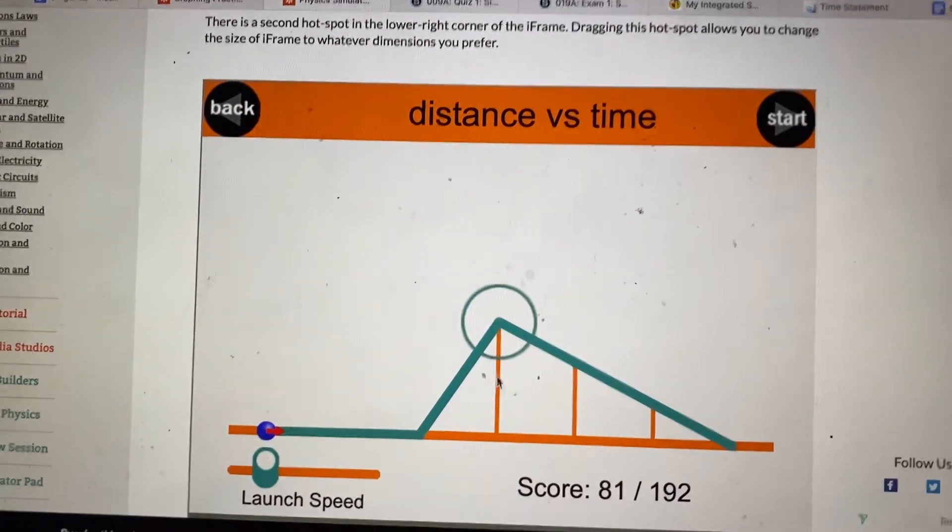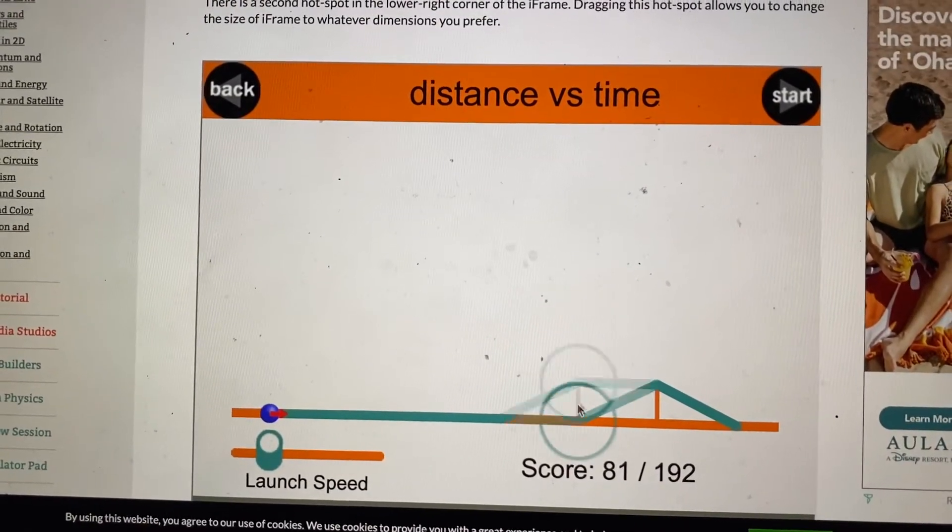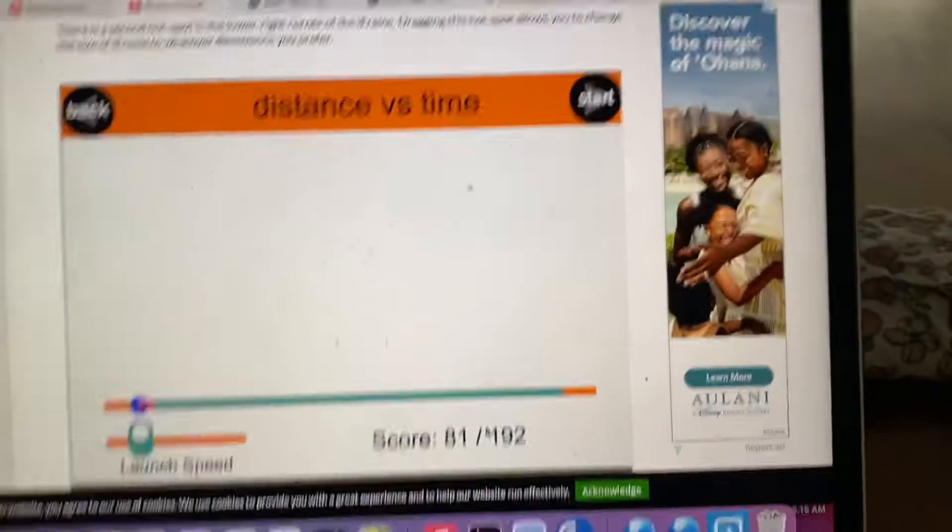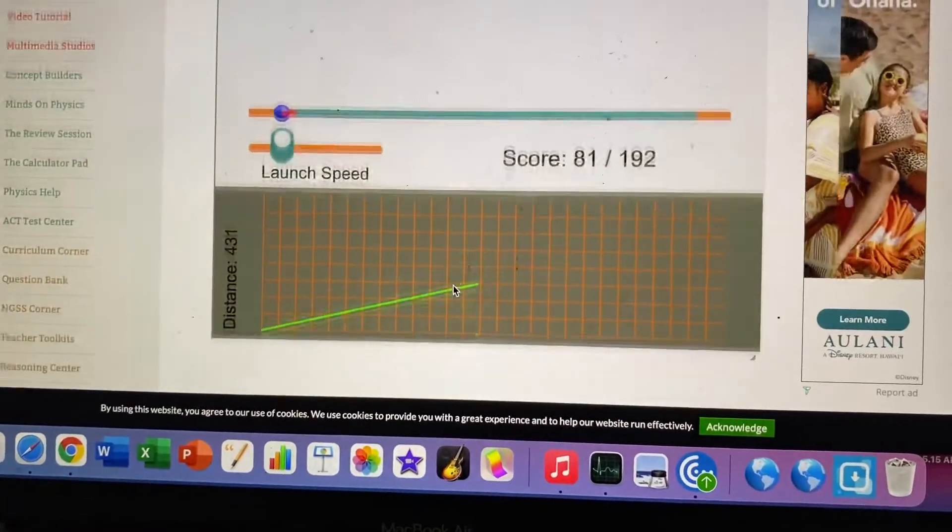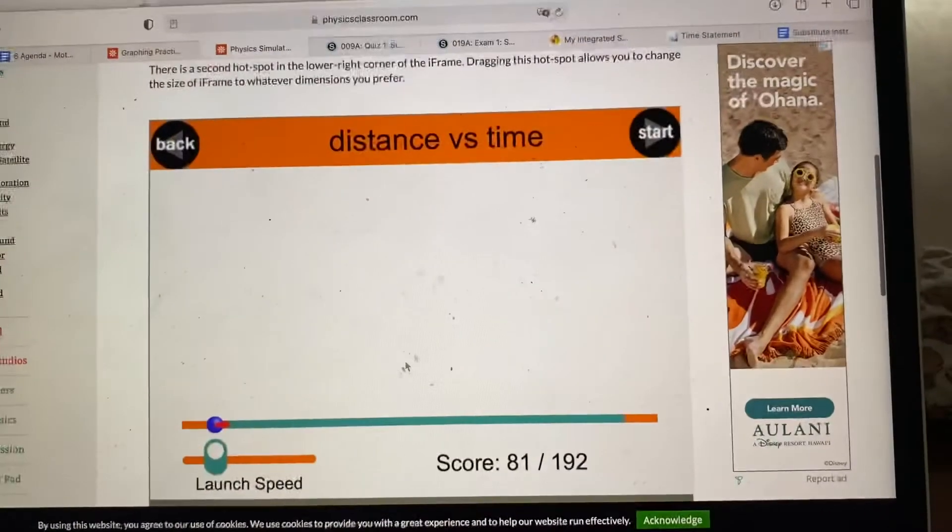Just clicking and dragging down. That's how you move the ramp. All right, click, drag. There we go. All right, so now I'm going to try this low launch speed and see if I get it to follow that.